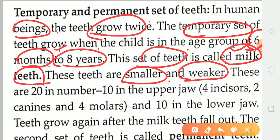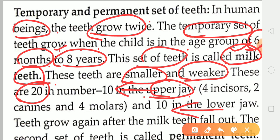Now let's talk about temporary teeth — their number, location, and type. The total number is 20. The jaw has 2 parts: the upper jaw and the lower jaw. The upper jaw has 10 teeth and the lower jaw has 10 teeth, making the total 20 teeth.